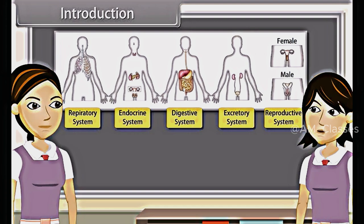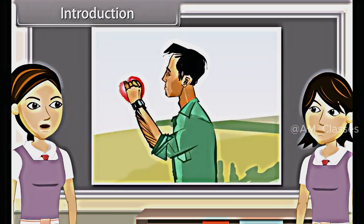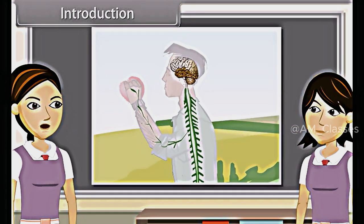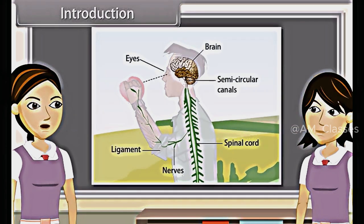All the organs of a system coordinate with each other so that the system can work properly. Coordination is the working together of the various organs in a systematic manner so as to produce a proper reaction to the stimulus.